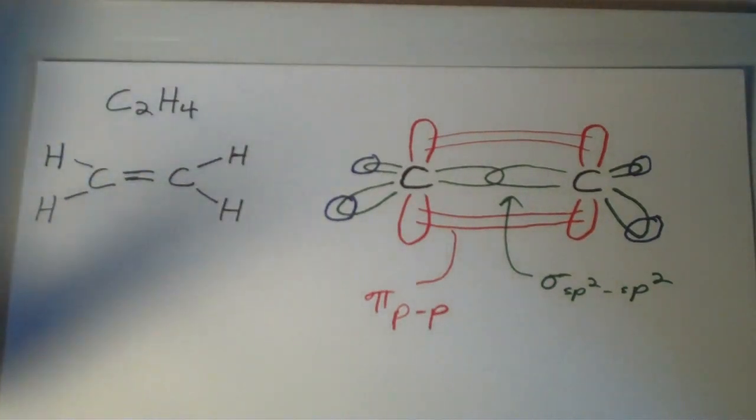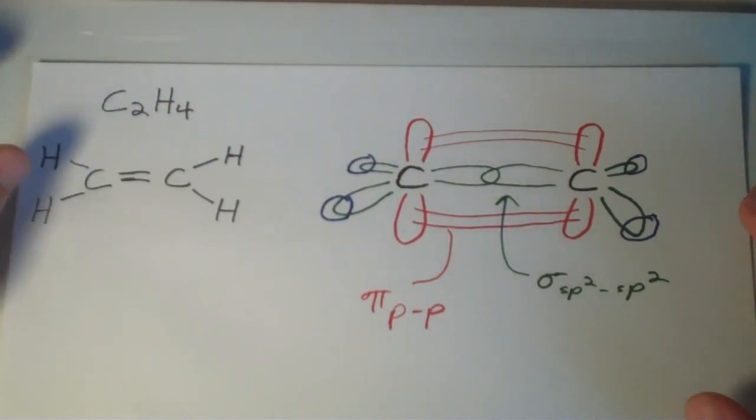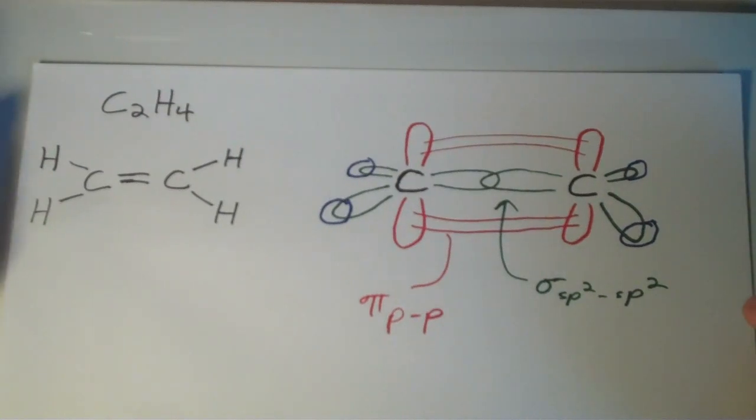In order to rotate around this bond, you would have to essentially break the pi bond to do it. And at room temperature, generally the atoms do not have enough kinetic energy to do this. So as I said, this gives rise to what we call cis-trans isomerism.